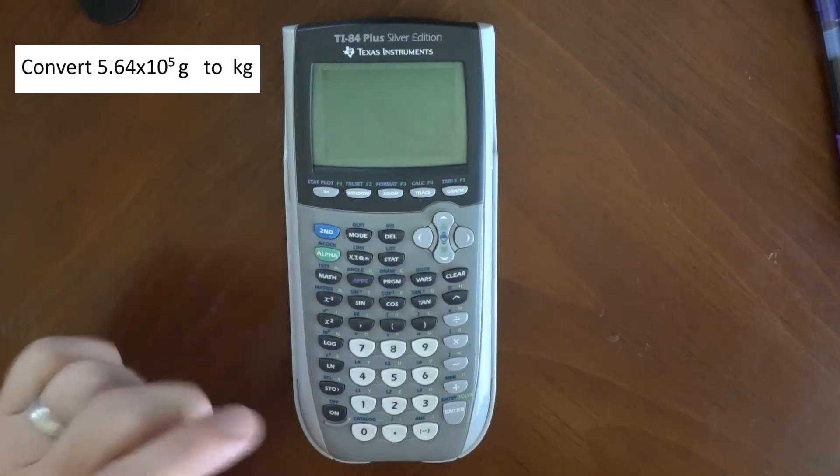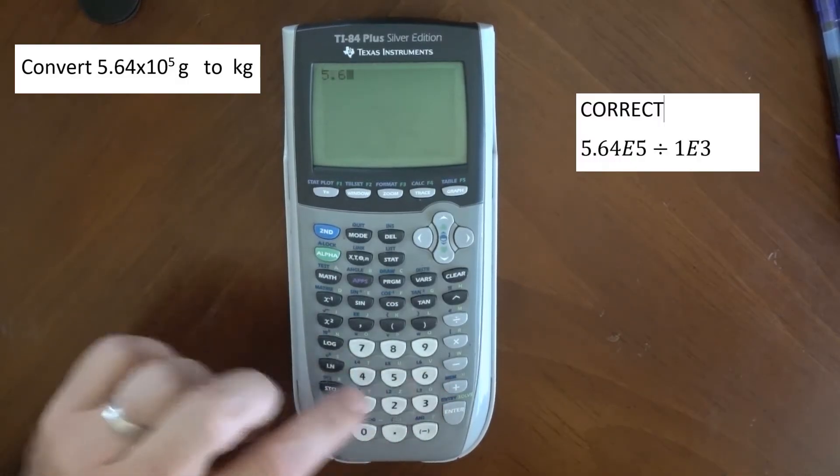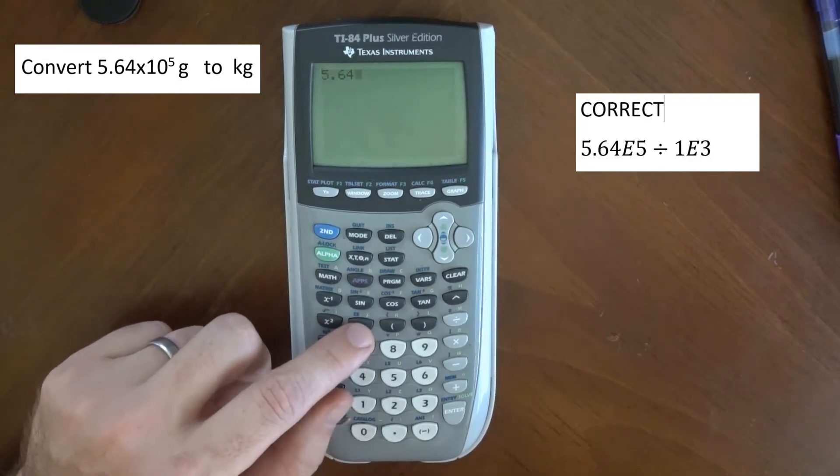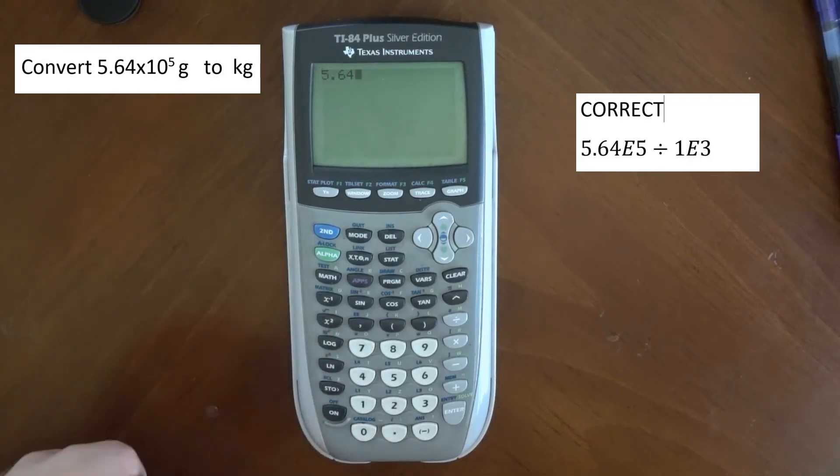The correct way to put this into your calculator is like this: 5.64, and then I'm looking for a button that says EE or EXP. On this TI calculator, EE is the button I'm looking for.